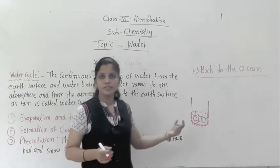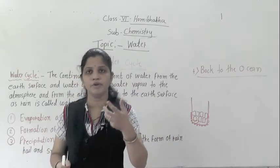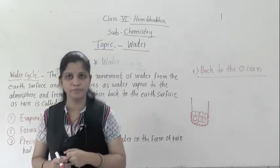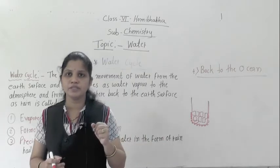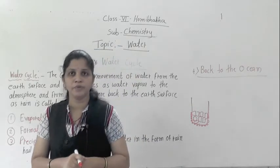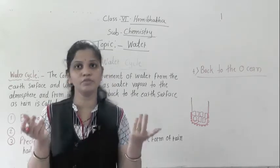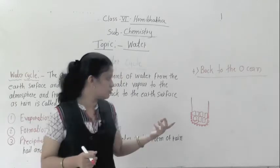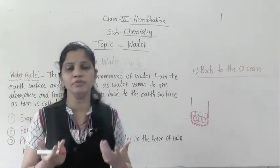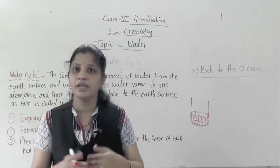Why does this happen? The ice cubes are inside the glass, so why are water droplets on the outside surface? Maybe you have seen this — when you take a water bottle from the freezer, after some time you will see small small water droplets on the outside. What is the reason behind that? How does the water come out?